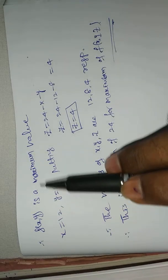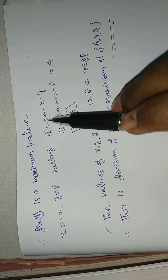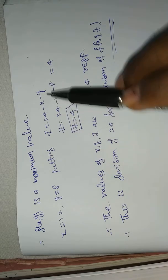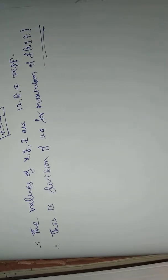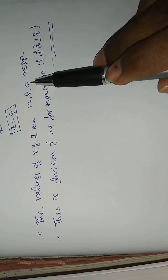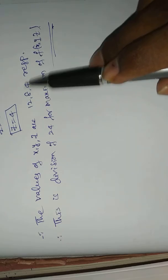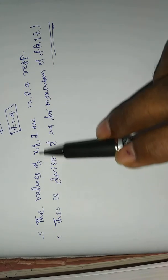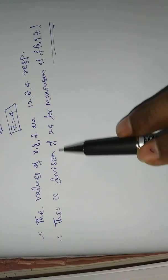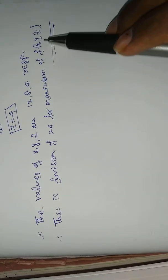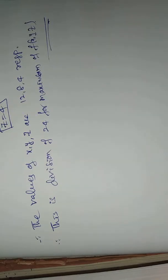Therefore f(x, y) has a maximum value at x equals 12 and y equals 8. Putting z equals 24 minus x minus y, the value of z is 24 minus 12 minus 8 equals 4. So the three parts of 24 that maximize the given expression are x equals 12, y equals 8, and z equals 4 respectively.